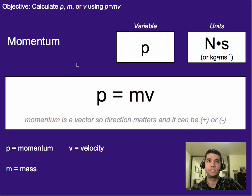So momentum is defined by this equation: P, which is momentum—that's the variable for momentum—equals mass times velocity. The units for that are kilograms times meters per second. Literally, the mass is in kilograms, the velocity is in meters per second. So that's the units for it.